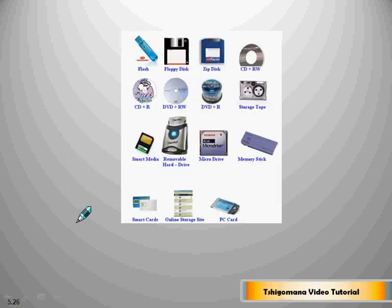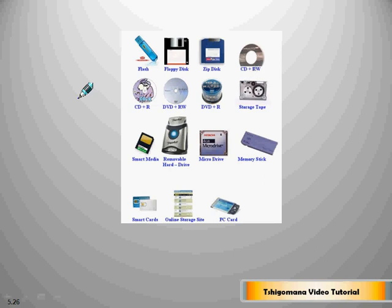This is an example of secondary storage: the flash disk, the floppy disk, the zip disk, CD rewritable, CD recordable, DVD rewritable, DVD recordable, storage tape, smart media, removable hard drive, micro drive, memory stick, smart cards, online storage site, and PC cards.